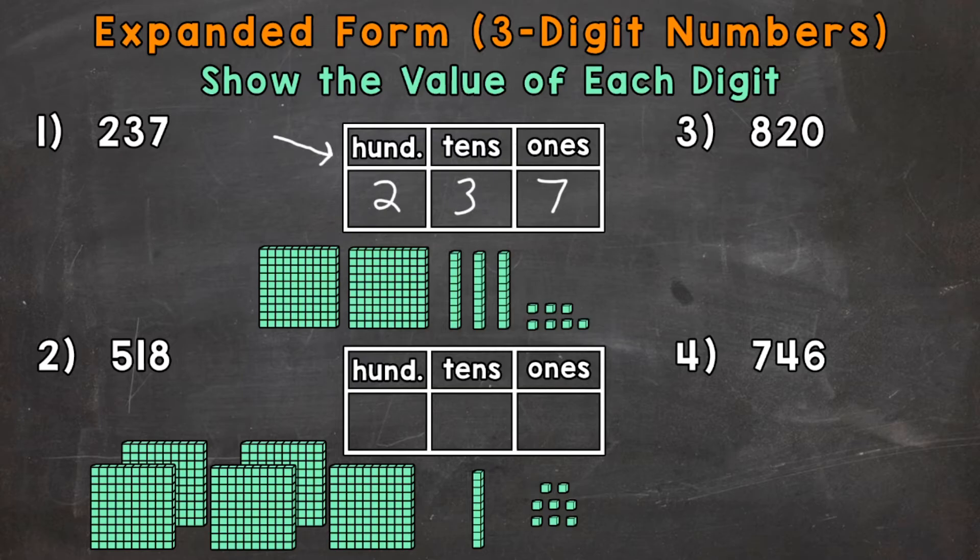So again for expanded form we want to show the value of each of these digits. And we'll start with our greatest valued digit, so the digit furthest to the left, this 2. So that 2 is in the hundreds place, so it has a value of 200. It's representing two groups of 100. And we can see with our place value blocks right here we have 100, 200 to give a visual of the value of that digit. So we'll start by writing 200. Again the value of the 2 is 200 because that 2 is in the hundreds place.